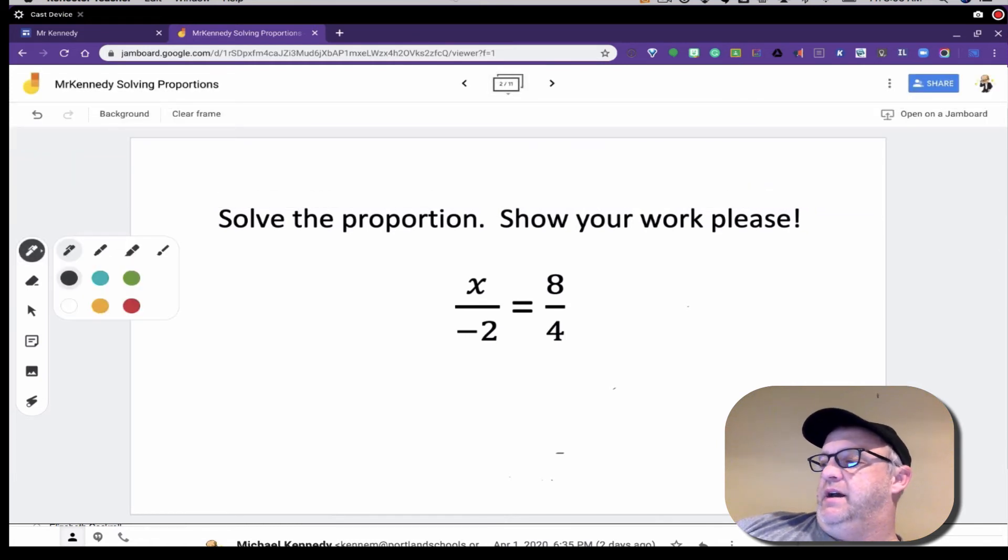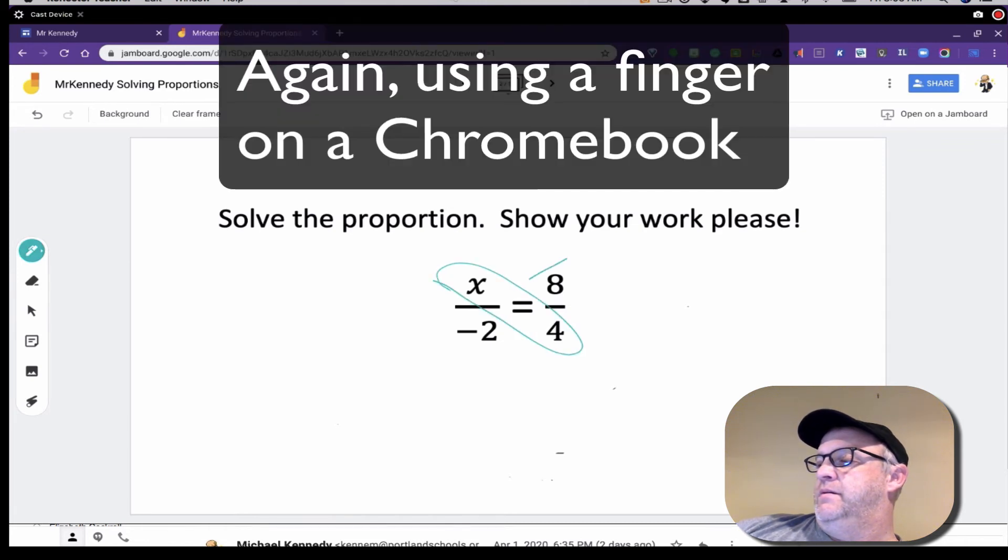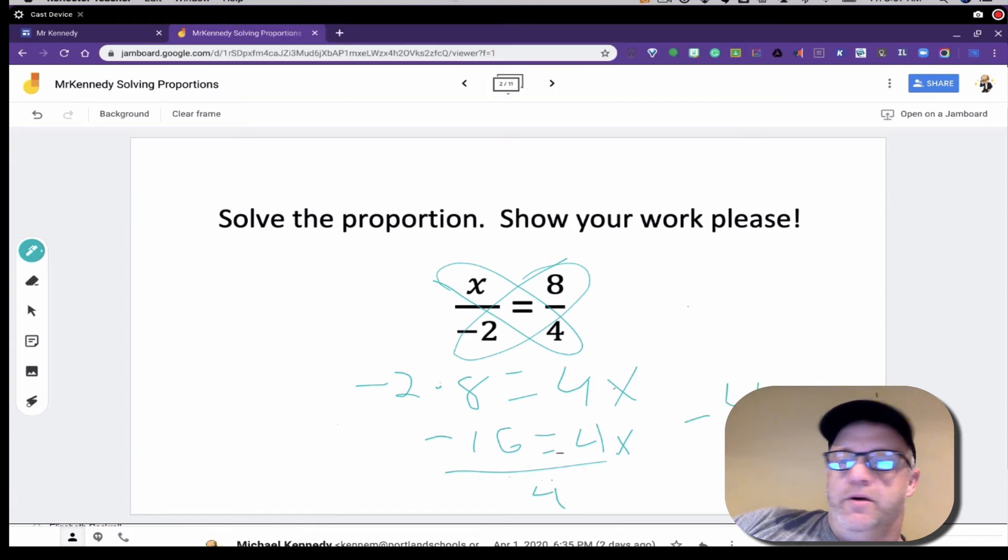If I want to use a different color, I can change the color of my pen. So now I have negative 2 times 8 equals 4 times x, which is negative 16 equals 4x. Divide by 4, and negative 4 equals x. There you go.